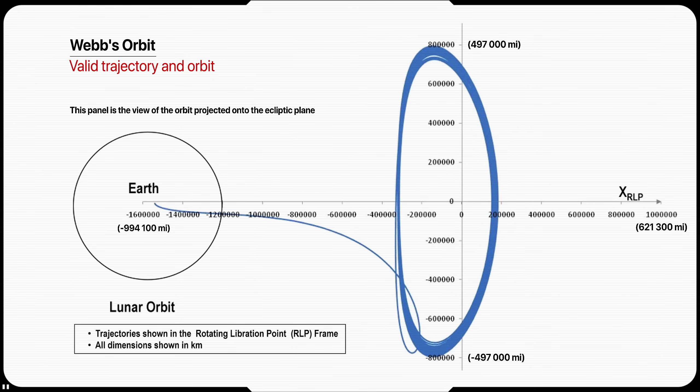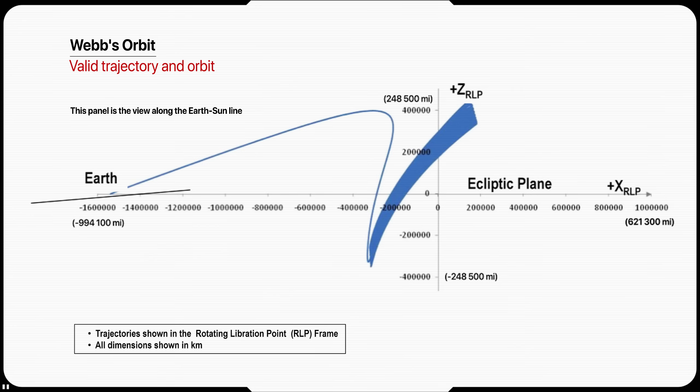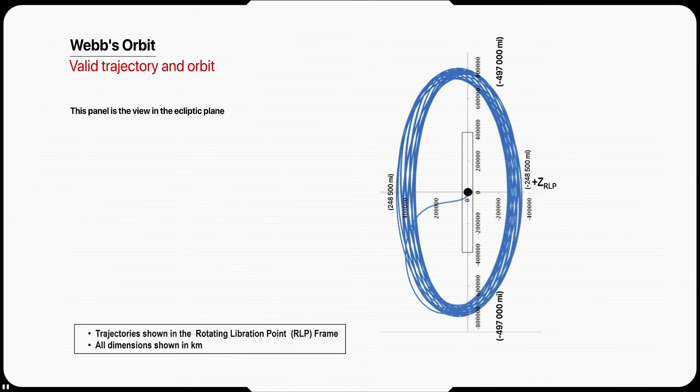The period of the orbit is about six months. The maximum excursion above or below the ecliptic plane is 520,000 kilometers. The maximum distance from Earth is 1.8 million kilometers, and the maximum Earth-Sun angle is less than 33 degrees.